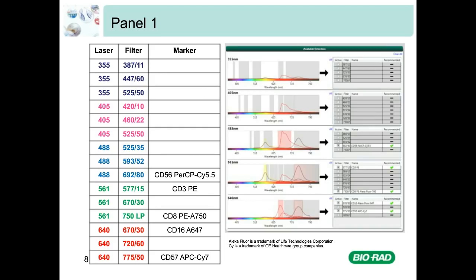If we look at the first example of panel design, we will use a method that many of you can relate to: we will just use what is available, or what we have in the fridge. This method is kind of like playing the lottery, and the likelihood of getting a good panel is about as likely as winning the jackpot. In this example, we had: CD56 conjugated to PerCP-Cy5.5, CD3 with PE, CD8 with PE-Alexa Fluor 750, CD16 with Alexa Fluor 647, and CD57 with APC-Cy7. A nice feature with the Everest software on the ZE5 is the instant spectrum viewer, which gives hints about spectral overlaps between different fluorophores before running the experiment.